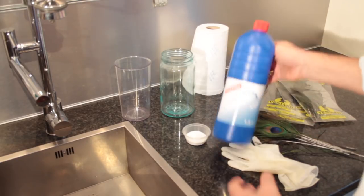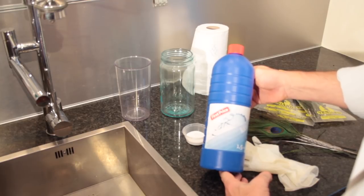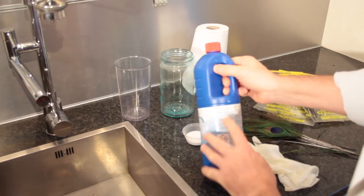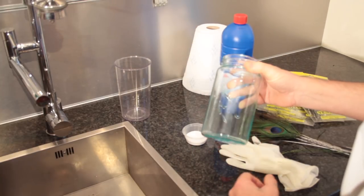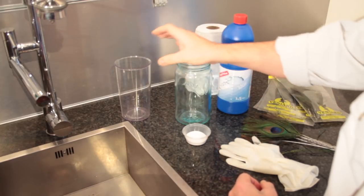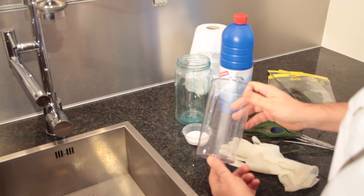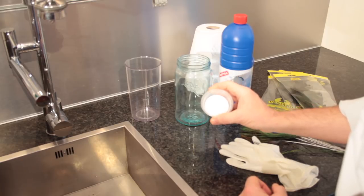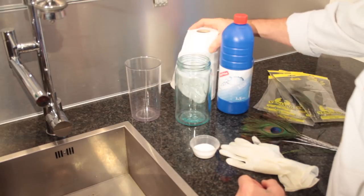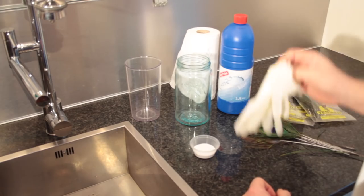What we need is some household bleach, this is just regular bleach at 2.4%, a clear large glass, a measuring jug, natron or baking soda, paper towels, and rubber gloves.